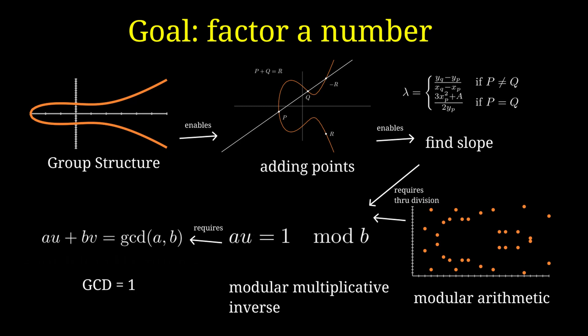we also need to find the modular multiplicative inverse of a number. And when we use the extended Euclidean algorithm to calculate that modular multiplicative inverse, we require the GCD to be equal to 1.